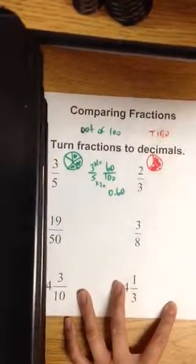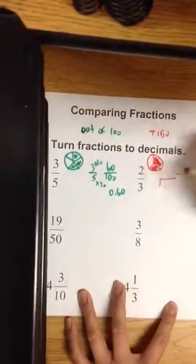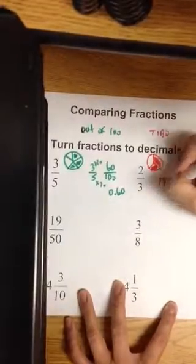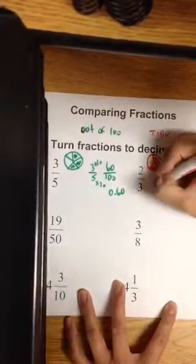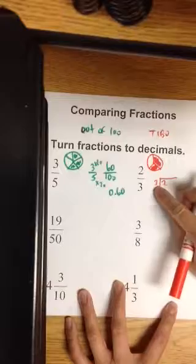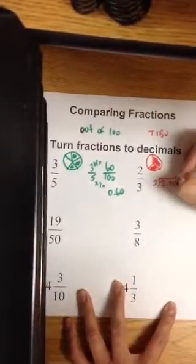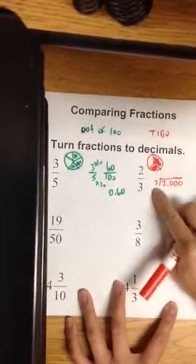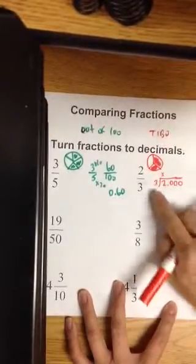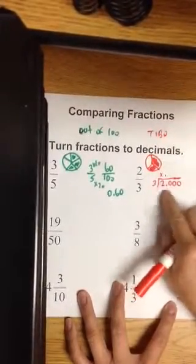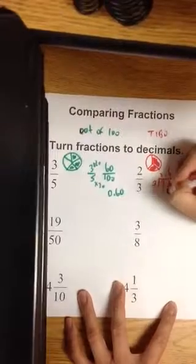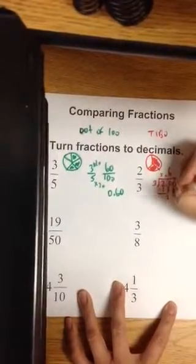For 2/3, since I cannot go into 100, we're going to do division. Who's on top? 2. Who's on the bottom? 3 goes out. How many placeholders do you need? Let's put 3 placeholders. Can 3 go into 2? No. Decimal point. Can 3 go into 20? 6 times. 2 is the remainder. I bring down a 0.